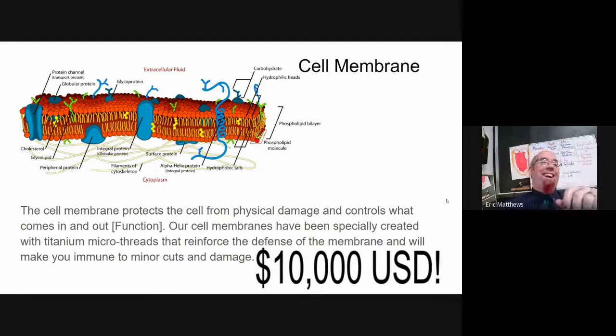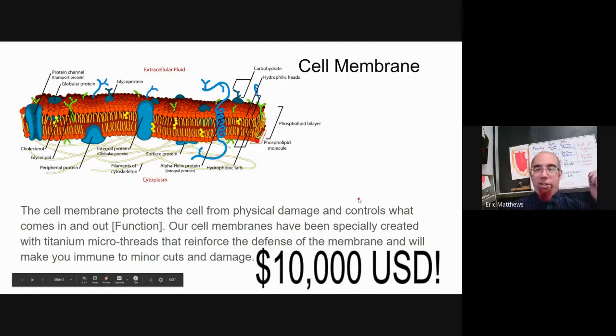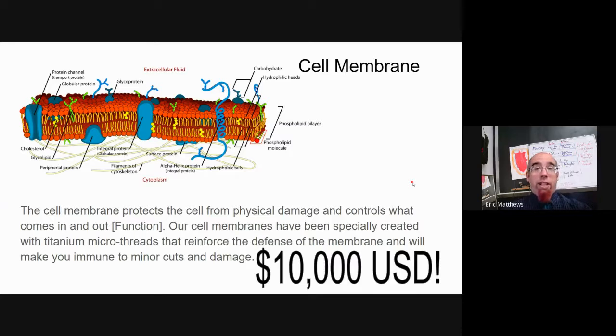So anyway, now for the sales pitch. Our cell membranes have been specially created with titanium micro threads that reinforce the defense of the membrane and will make you immune to minor cuts and damage. So what I did there was I took what the cell membrane normally does and I kind of amped it up because my version is superior to your natural version. And I want to convince you what you can gain by buying my organelle. And then I include a price because it's sales catalog. You have to include some kind of price. $10,000 US money. So that's an example of the cell catalog.